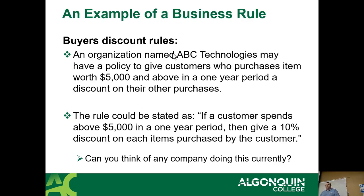A sample business rule: an organization called ABC Tech can have a policy of giving customers who purchase items worth $5,000 and above in one year a discount. The rule would be reworded as: as long as a customer spends over $5,000 in a one-year period, then give a 10% discount on each item purchased by the customer. That's actually a very complex rule.